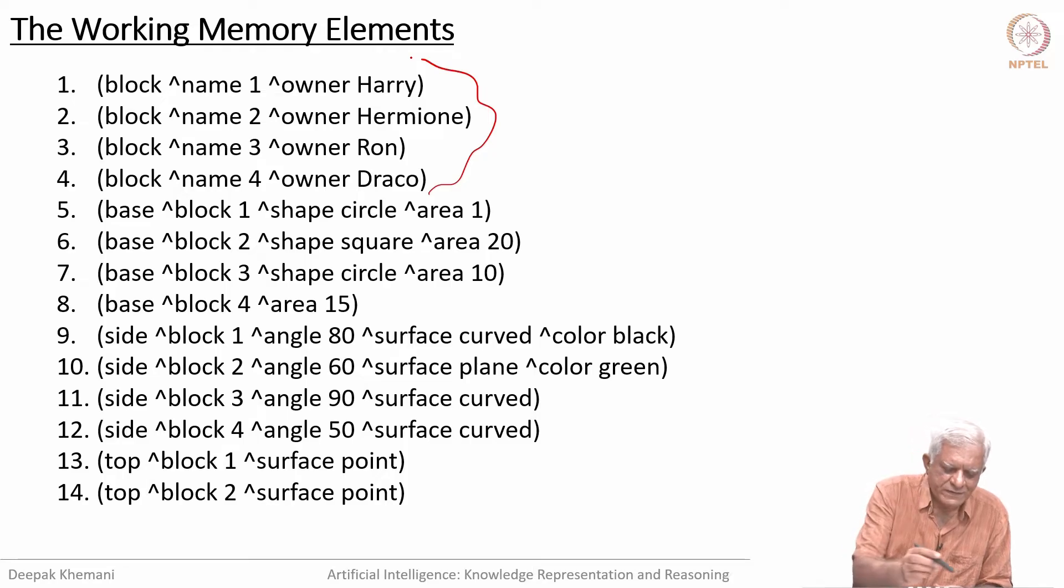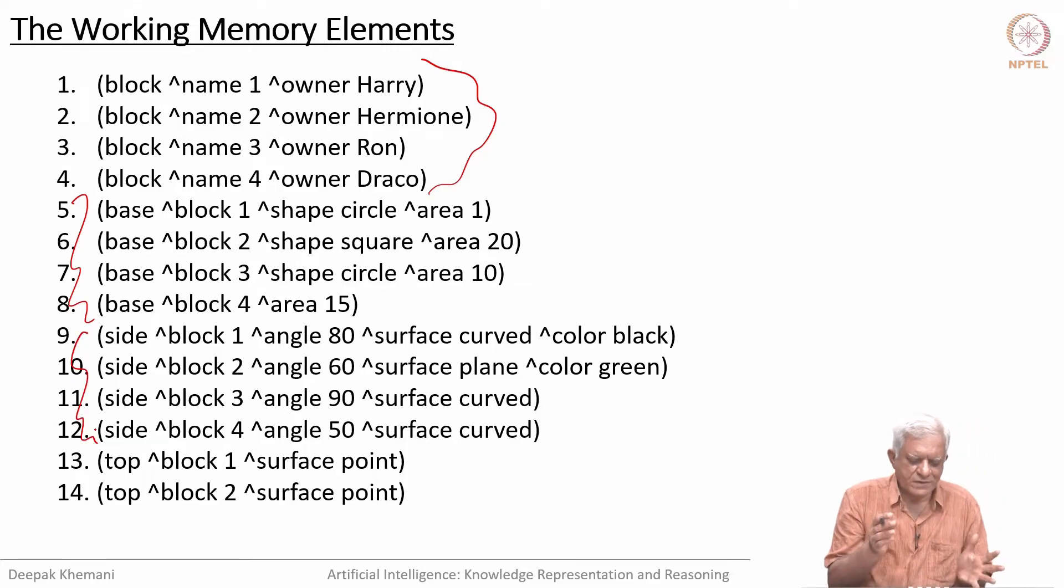We have four blocks: 1, 2, 3, 4, and we have some knowledge about the base of these four blocks—some is a circle, some is a square, and so on. Then we have some information about the sides of the four blocks—some may be curved, some may be plane, some may have an angle. We have information about top of two blocks, not all. We do not have a complete knowledge base; we have some information.